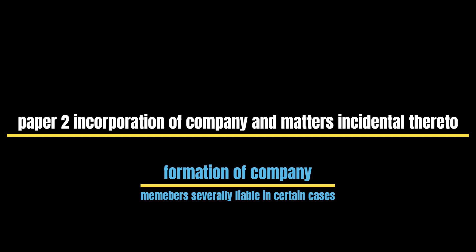Kinds of Company: Under Incorporated Companies, on the basis of Mode of Registration, a company may be a Registered Company, Statutory Company, or Chartered Company. Under Registered Companies, there can be classification on the basis of Liability: first, Limited by Shares; second, Limited by Guarantee; third, Unlimited.